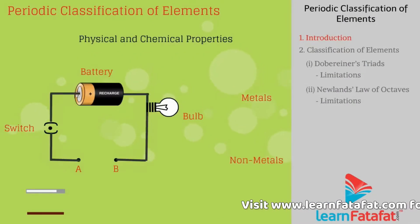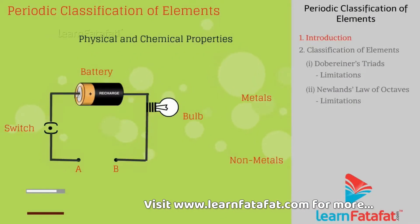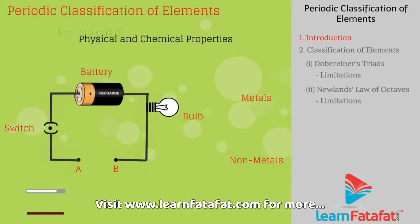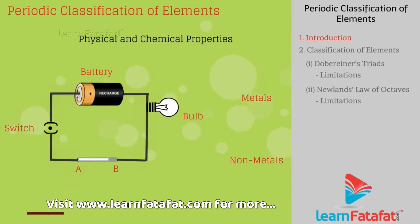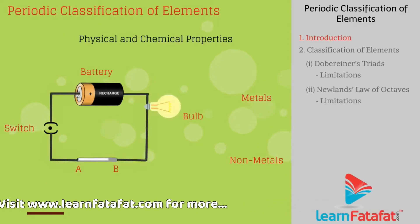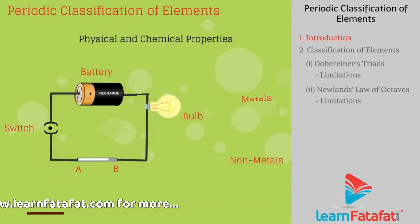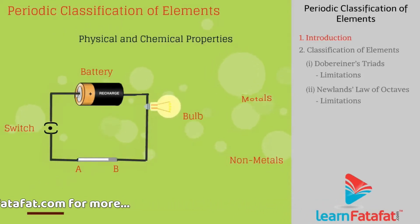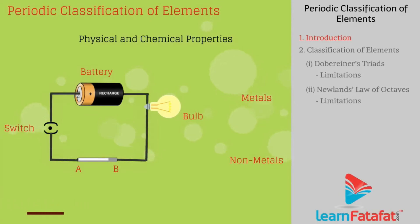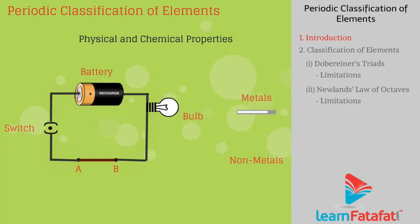Scientists started classifying elements based on physical and chemical properties. For example, elements that conduct electricity are metals, and elements that did not conduct electricity are non-metals.